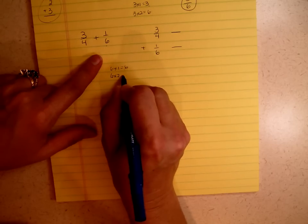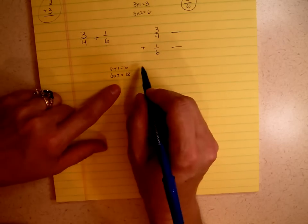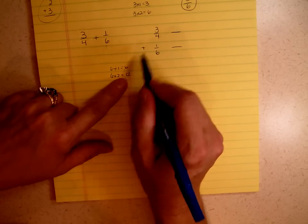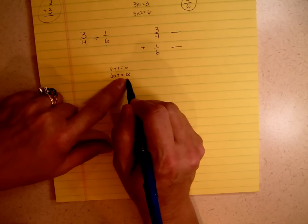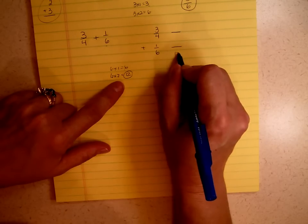Now I'm going to try six times two. Six times two is twelve. Can I divide twelve by four and get a whole number? And the answer is absolutely yes. So twelve is my least common denominator.